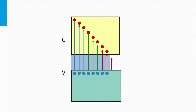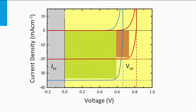If we now consider an absorber material with a lower bandgap, we see that more photons in the spectrum can excite charge carriers. This material will result in large short circuit current densities. However, due to the smaller bandgap, the splitting of the quasi-Fermi levels and the resulting open circuit voltage will become smaller. This is reflected in the blue JV curve — the solar cell with the low bandgap material has a larger short circuit current density, whereas the open circuit voltage is smaller.